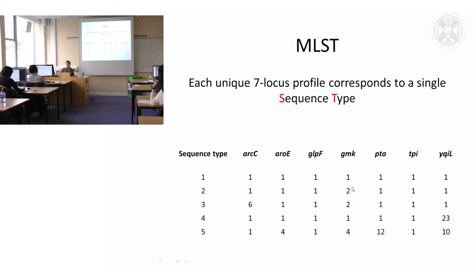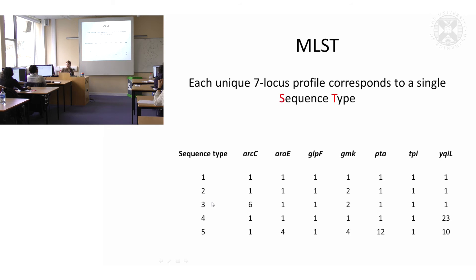In Staphylococcus aureus, there are seven genes used for multi-locus sequence typing — it tends to be between six and eight depending on the species. For each gene there would be an allelic variant. Sequence type one has allelic variant one for all seven genes. Sequence type two has allelic variant one for all genes except one, so because it has only one variant difference, we call it a single locus variant. A double locus variant has two differences. Three would be a single locus variant of number two. Sequence types with more differences — a quadruple or quintuple locus variant — would be less closely related.